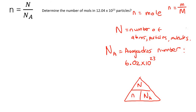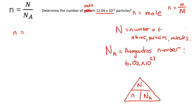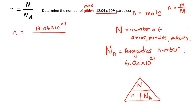Here's a question: determine the number of moles if you have 12.04 times 10 to the 23 particles. We're trying to calculate the number of moles, so we rearrange the formula. The number of particles given is 12.04 times 10²³, and Nₐ is 6.02 times 10²³. Dividing gives us 2 moles.